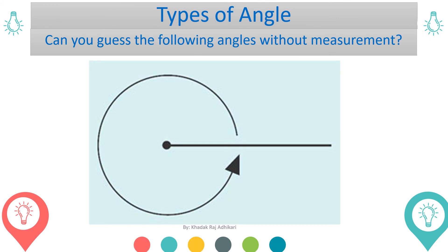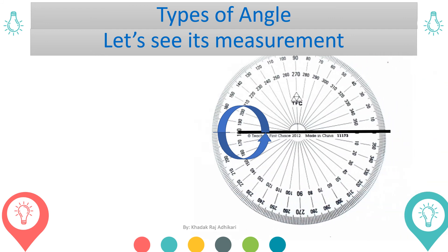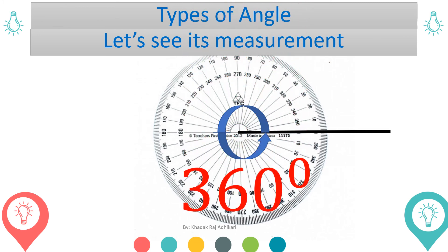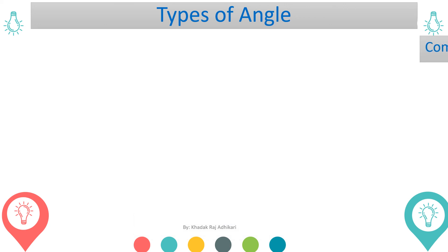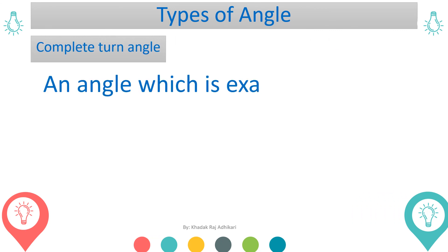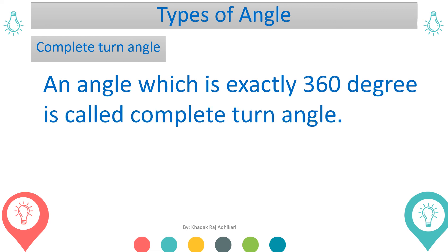Finally, can you guess the measurement of this angle? Let's see the measurement. The measurement of this angle is also 360 degrees. This is called a complete turn angle. An angle which is exactly 360 degrees is called a complete turn angle.